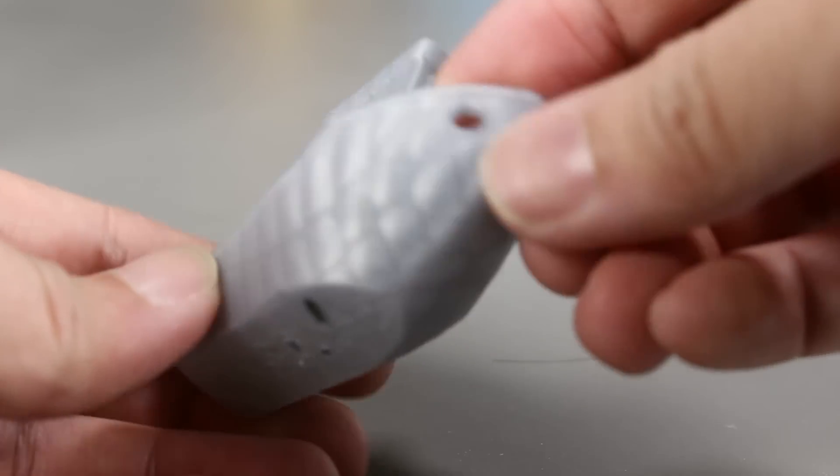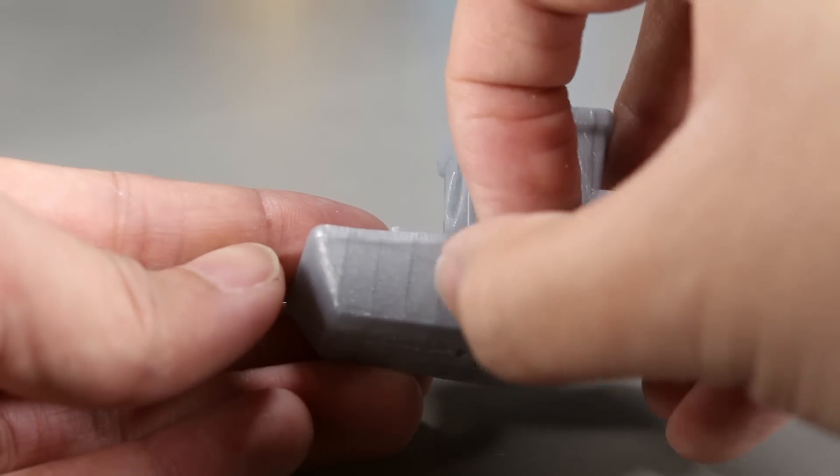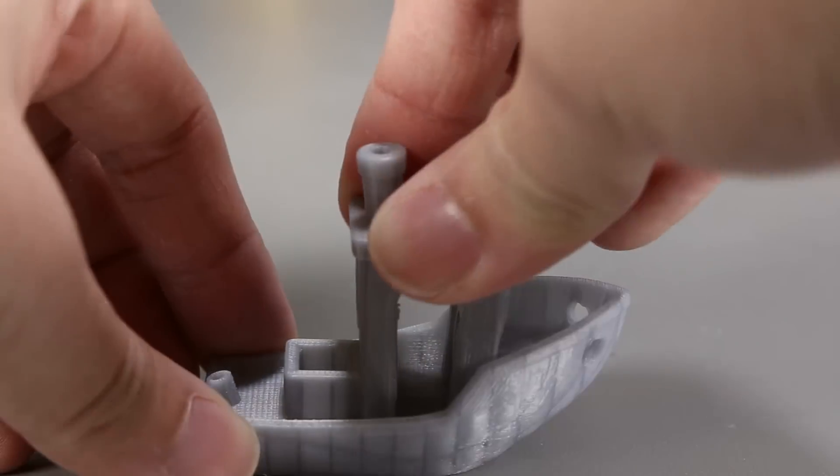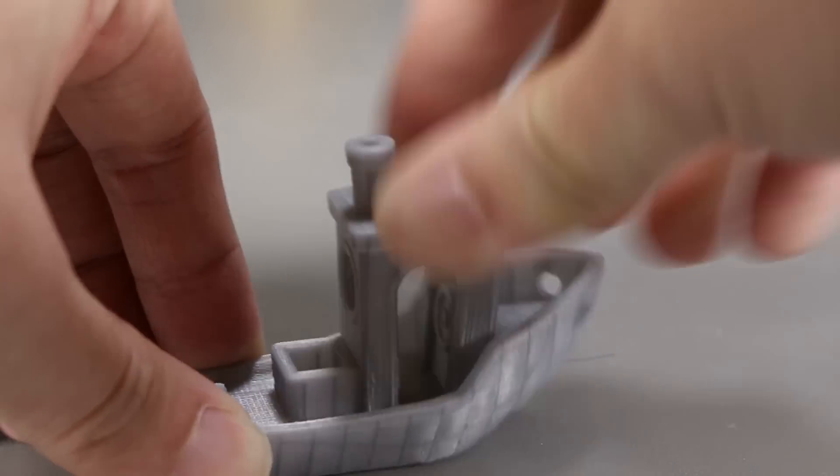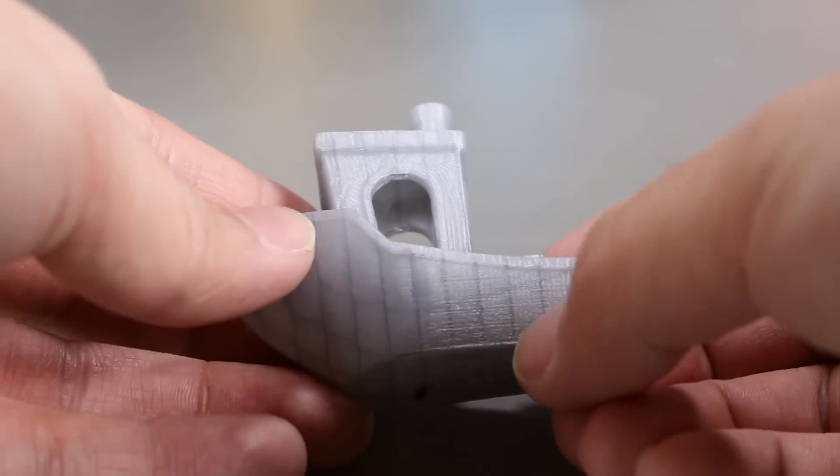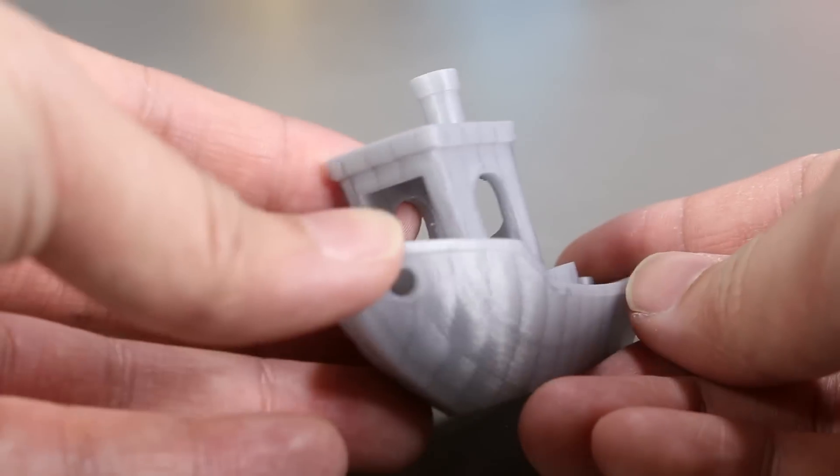But I did notice something differently than acetone is the infill lines are a lot more apparent now. It is actually a bit bulgy as well. It's bumpy on those parts. But the main point of this experiment is to smooth the surface, and it didn't achieve the results that we wanted.